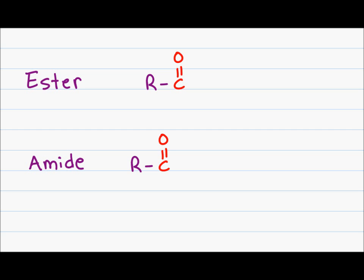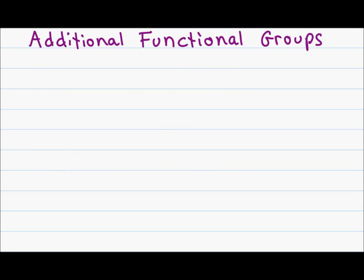Don't confuse the OH in carboxylic acid with the hydroxyl group. Whenever you see a carbonyl directly attached to the OH, that is a dead giveaway for carboxylic acid. An ester is characterized by a carbonyl group attached to an oxygen, which is located between two different R groups. And the amide is characterized by a carbonyl group directly attached to a nitrogen group, for example NH2.